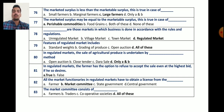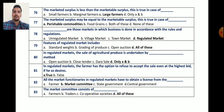Next question, question number 79: features of regulated markets include standard weights, grading of produce, open auction method, and option D, all of these. The correct answer is all of these, because all these are the features of a regulated market.